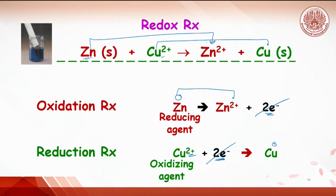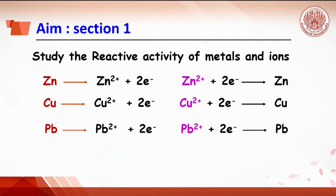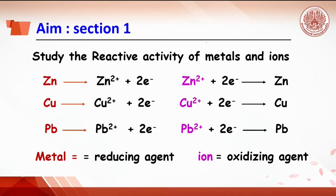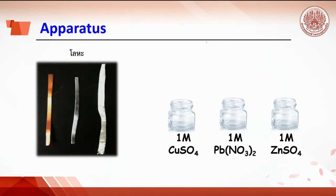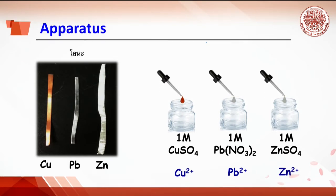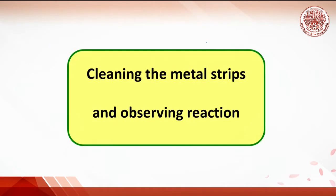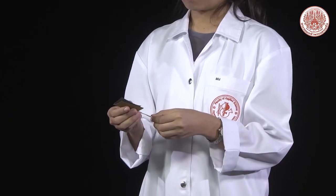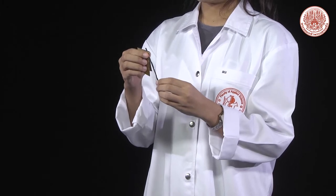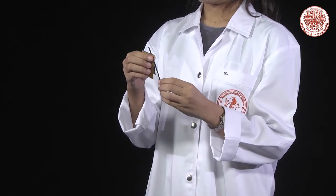In Section 1, the aim is to study the reactivity of metals and ions in terms of oxidizing agent and reducing agent. Three metal strips — copper, lead, and zinc — are used along with copper ions from one molar copper sulfate, lead ion from one molar lead nitrate, and zinc ion from one molar zinc sulfate. Clean all metal strips with sandpaper to remove oxide or surface film.